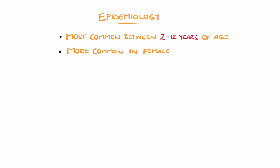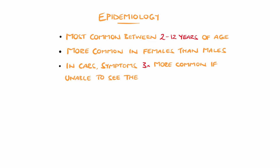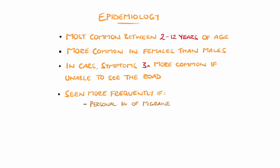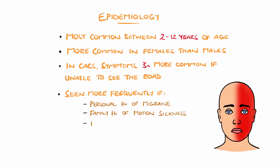Some research has shown symptoms to be three times more common in those who cannot see the road, compared to those who could. It is also more common in those who suffer from migraines, and have a family history of motion sickness, as well as in pregnancy and those using hormonal contraception.